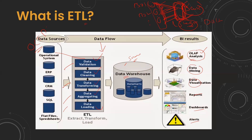Once the ETL process is completed, the data is available in the data warehouse. Based on this data, the next level — the Business Intelligence process — starts. Business Intelligence involves analytics on the database, also called data analytics, data mining, data visualization, and report generation. To do this BI process there are many tools available in the market, but the first stage is the ETL process. Once ETL is completed, all BI tools work based on the data warehouse data.